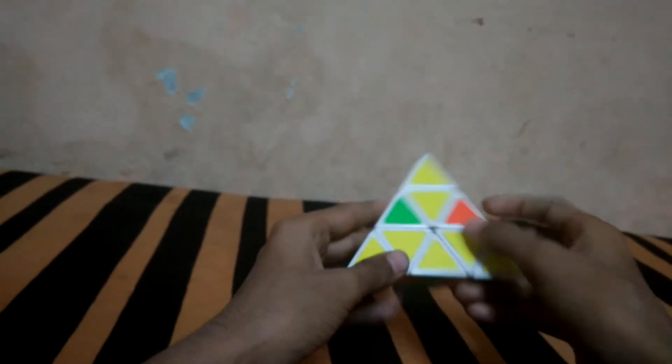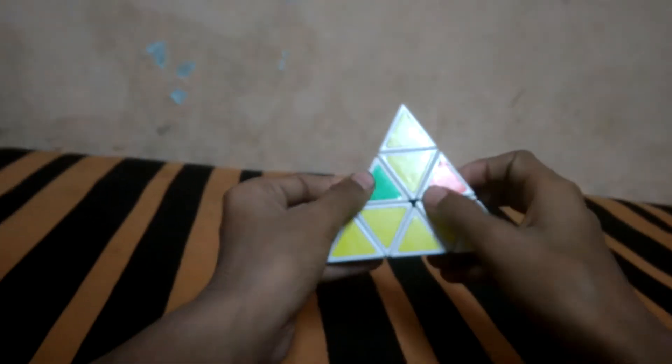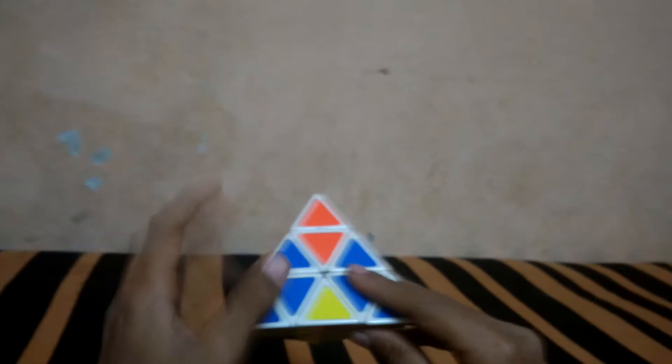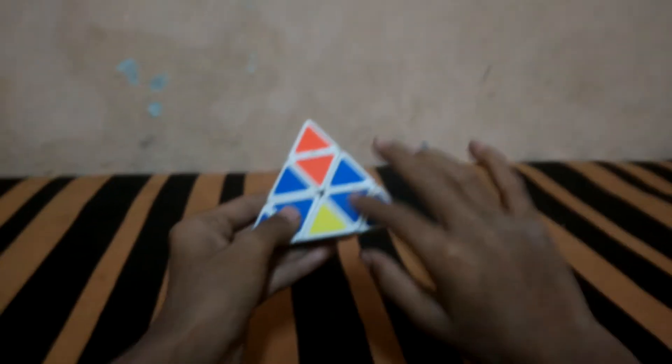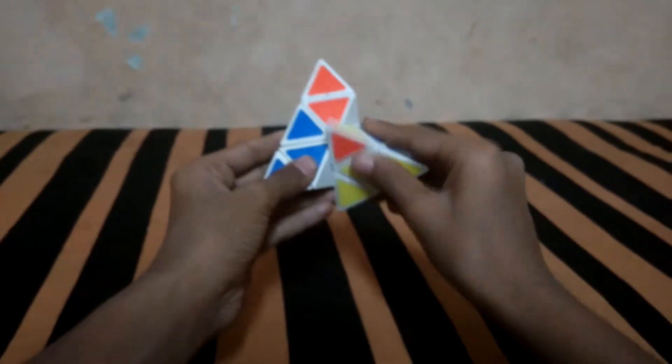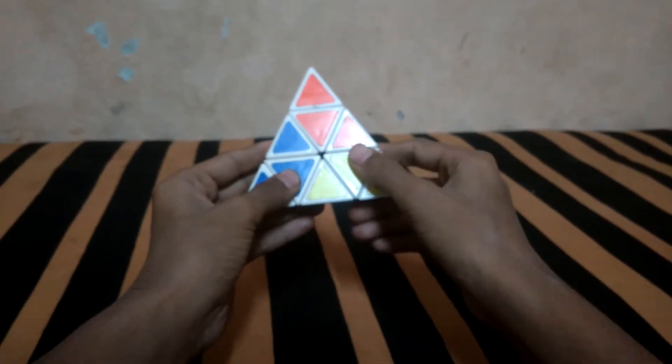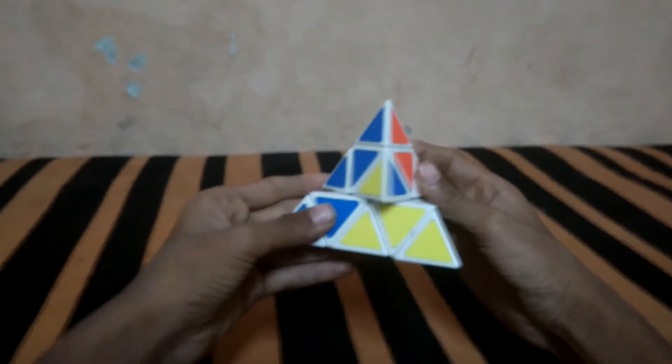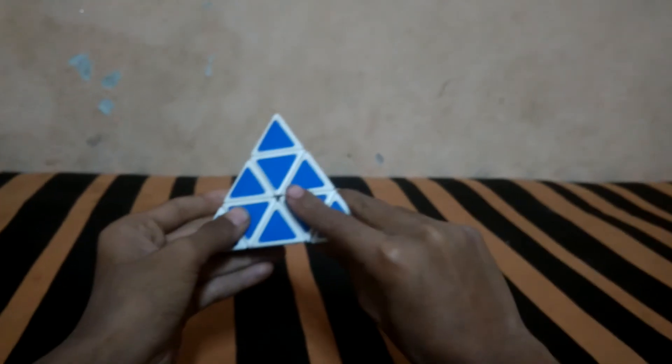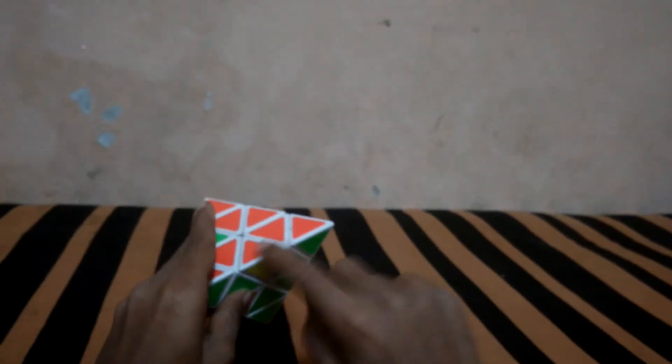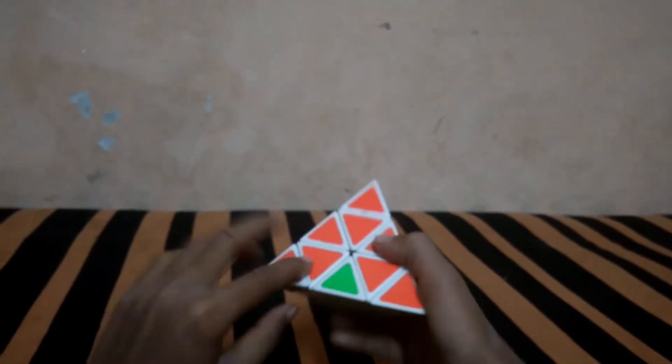Now we have to align the edges. Here it is. When we have to take the edge piece from left to down, the formula is R U' R'.